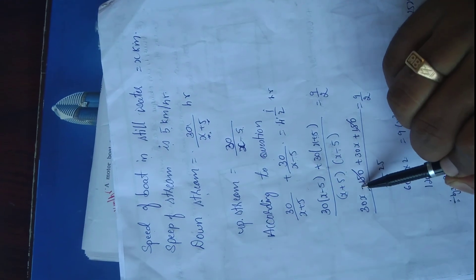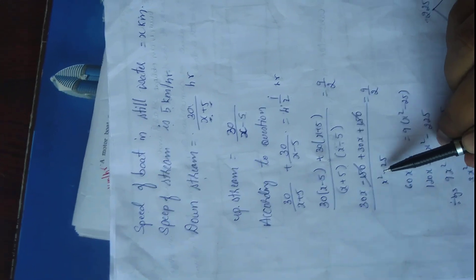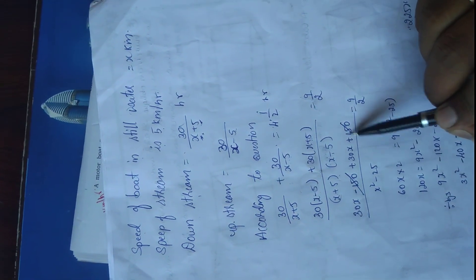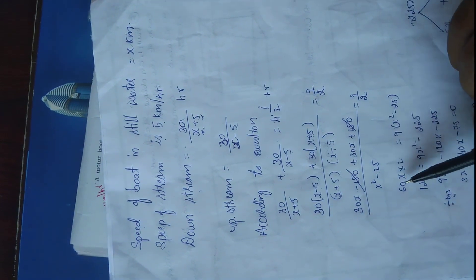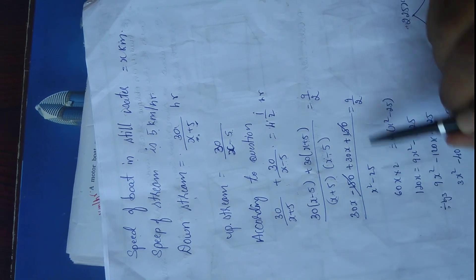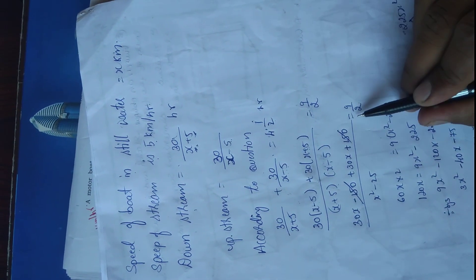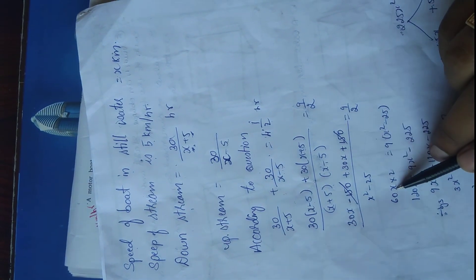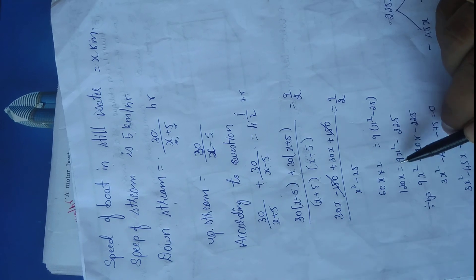Expanding, we get x squared minus 25. The plus 150 and minus 150 cancel out, leaving 30x plus 30x, which is 60x. Bringing x squared minus 25 to the other side gives 9 into x squared minus 25 equals 60x into 2, which is 120x.